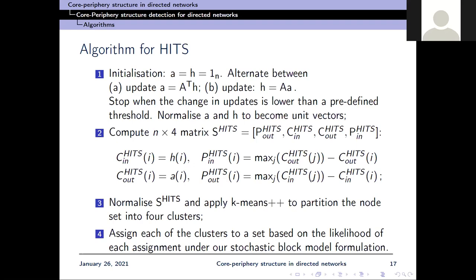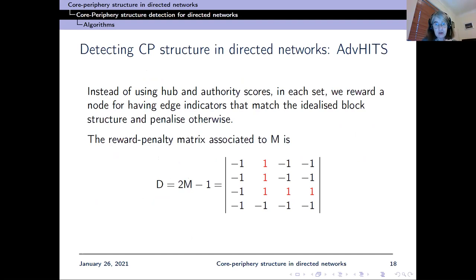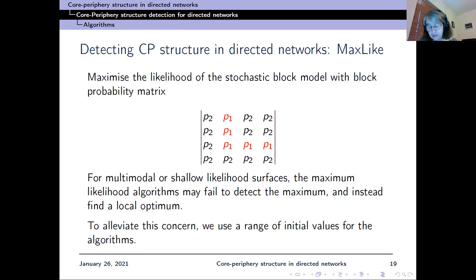This is a fast algorithm, but it doesn't use much network information beyond hub and authority scores. The second method, which we call Advanced HITS, rewards each node for having edge indicators that match the idealized block structure and penalizes otherwise. We use a reward-penalty matrix of (2n − 1), giving +1 for matching the ideal structure and −1 for not matching, then run the HITS algorithm and apply K-means++ as before.